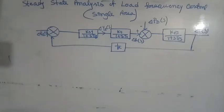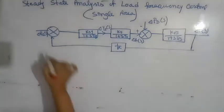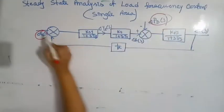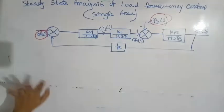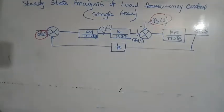There are two important incremental inputs to the load frequency control. One is delta PC, the change in speed changer setting, and delta PD, the change in load demand. Now, let us consider a simple situation in which the speed changer has a fixed setting, that is delta PC equals zero, and load demand changes. This is known as free governor operation.